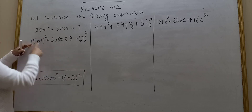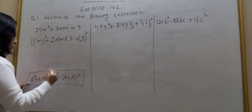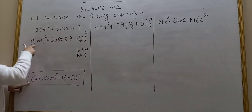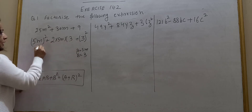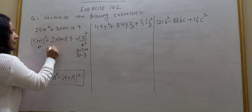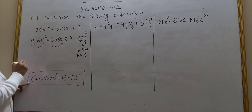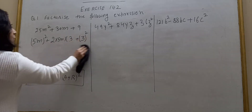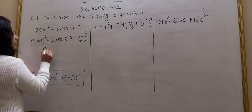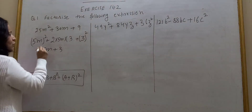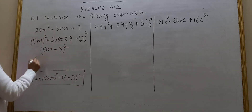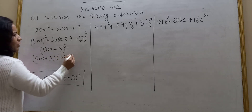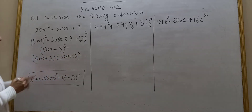A squared plus B squared plus 2AB gives A plus B whole square. So I write it as 5M plus 3 whole square. When you open it, you get back the original expression. But when factorizing, I write the product: 5M plus 3 into 5M plus 3.